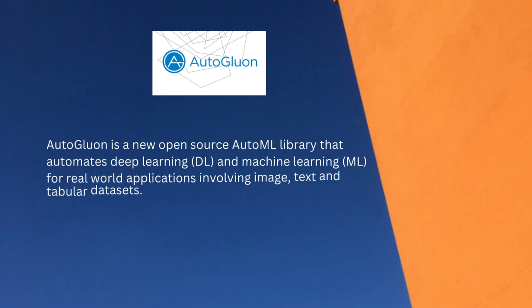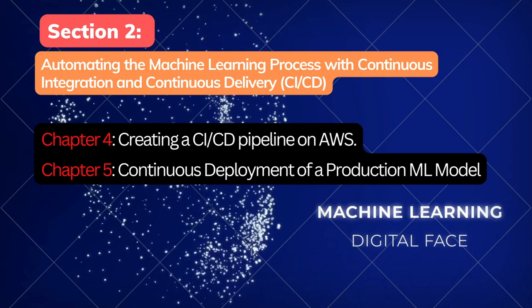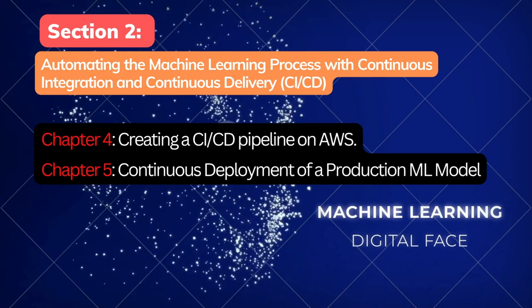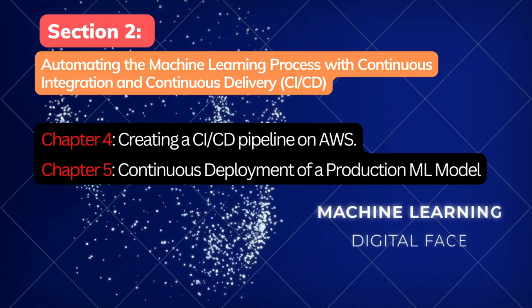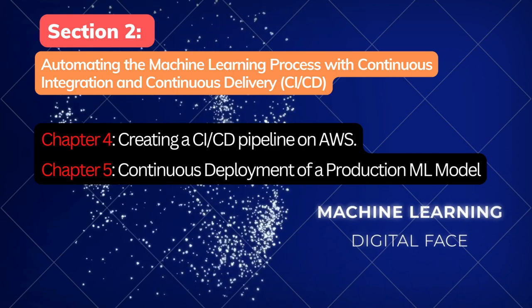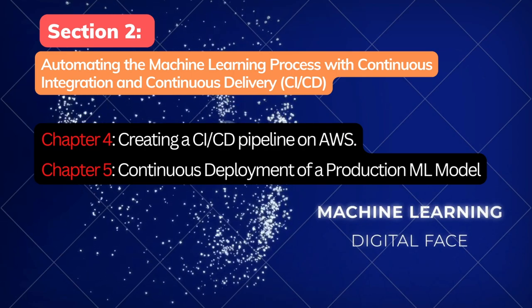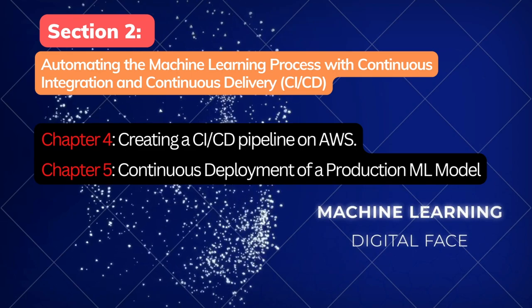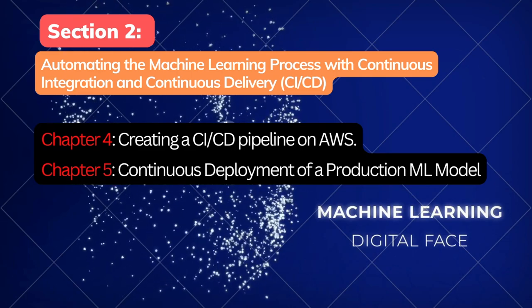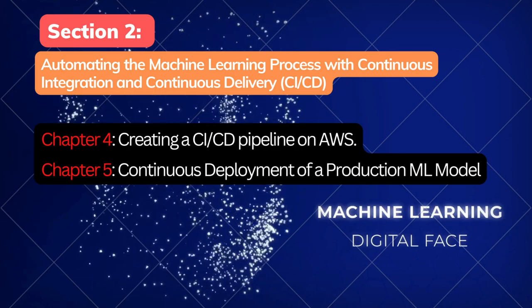AutoGluon is a new open-source AutoML library that automates deep learning and machine learning for real-world applications involving image, text, and tabular data sets. Section 2 covers Automating the Machine Learning Process with Continuous Integration and Continuous Delivery, and includes Chapter 4 — Creating a CI/CD Pipeline on AWS — which introduces the concept of Continuous Integration and Continuous Deployment and how it can be applied to an ML use case.